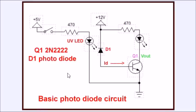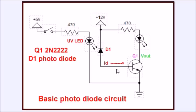Before, we used the photodiode simply to switch on a transistor — light strikes the photodiode, it's reverse biased, cathode to positive, and anode through the transistor to negative. The reverse leakage current simply switched on a transistor. Now we want to go beyond this: we want to measure a voltage that's proportional to the leakage current ID, so that the voltage is proportional to the light intensity.